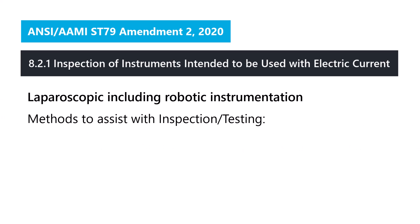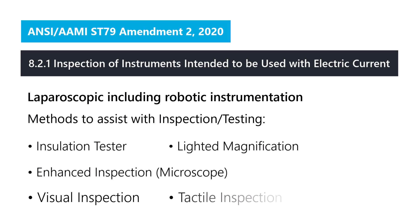Also included in the document is a table/list that states laparoscopic including robotic instrumentation, methods to assist with inspection/testing are as follows: insulation tester, light and magnification, enhanced inspection microscope, visual inspection, and tactile inspection.